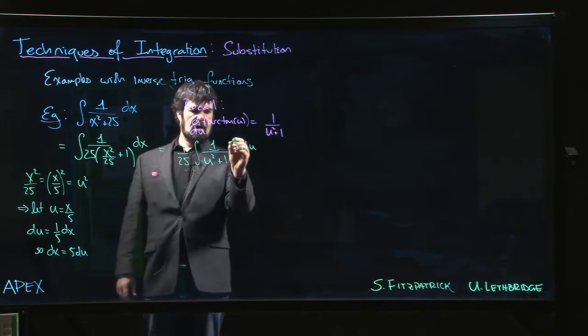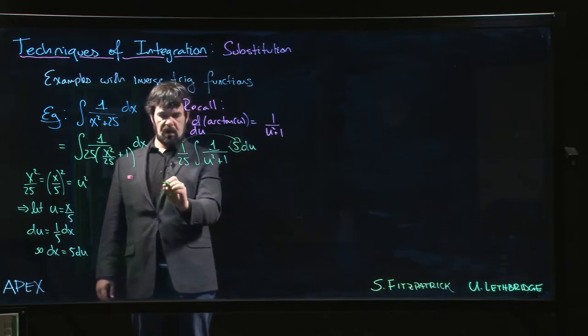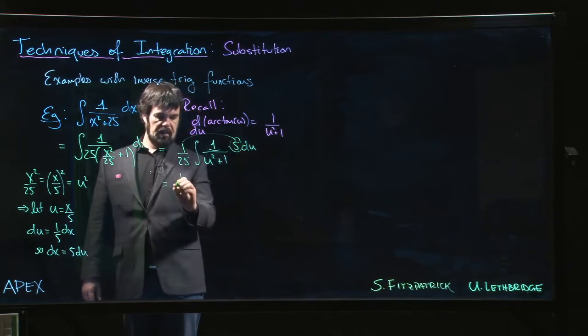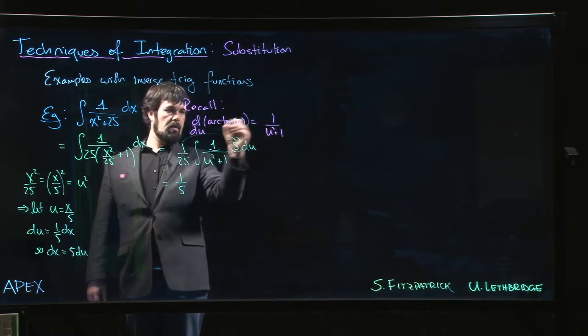So again, this 5 we can bring that out front as well. 5/25 we can simplify that to 1/5, and 1 over u² + 1, well we know that gives us arctan(u).